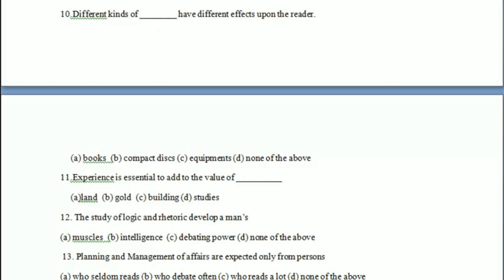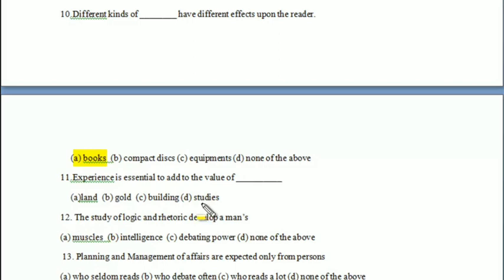Different kinds of — books, compact dishes, or equipment — have different effects upon the reader. Your answer is 'books.' Experience is essential to add to the value of — land, gold, building, or studies? Your answer is 'studies.' The study of logic and rhetoric develops — muscles, intelligence, debating power, or none? Your answer is 'debating power.'